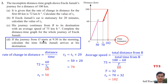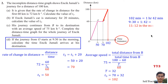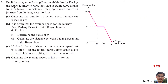If the journey from O starts at 9:30 in the morning, calculate the time Jumali arrives at his destination. 102 minutes equals 1 hour 42 minutes. Starting at 9:30, adding 1 hour 42 minutes gives 11:12 in the morning.